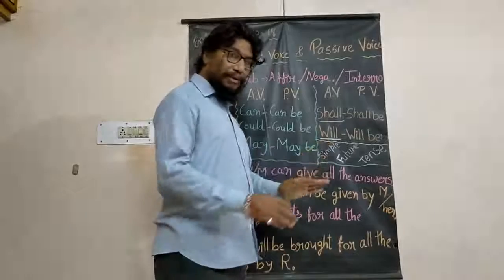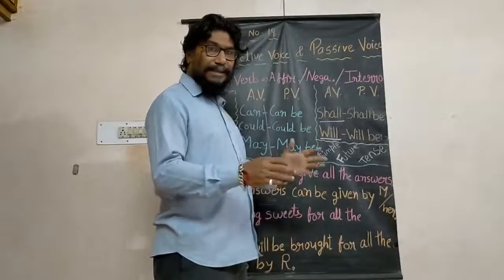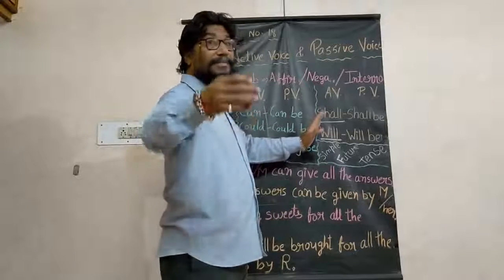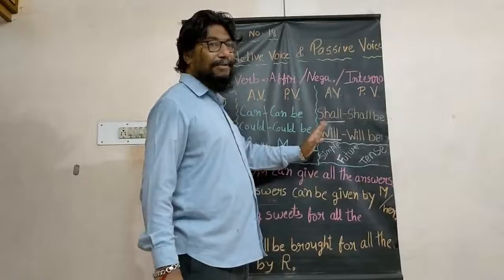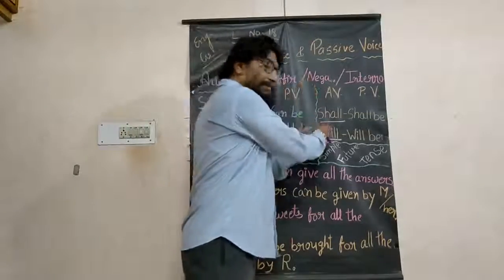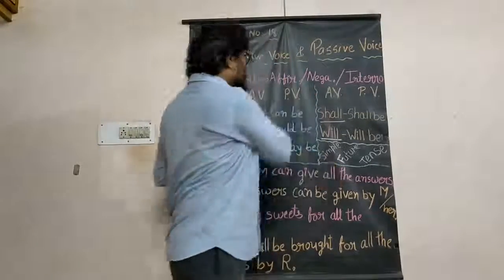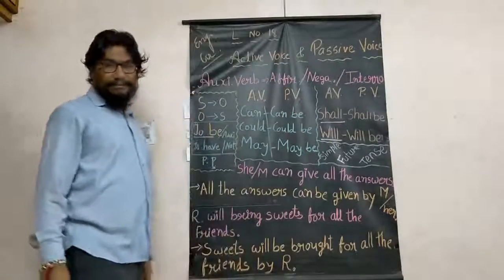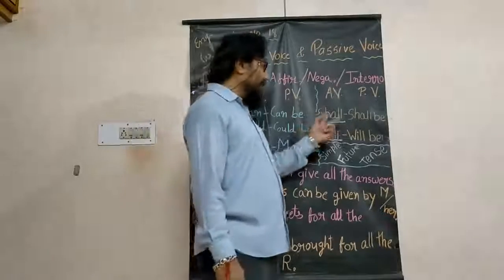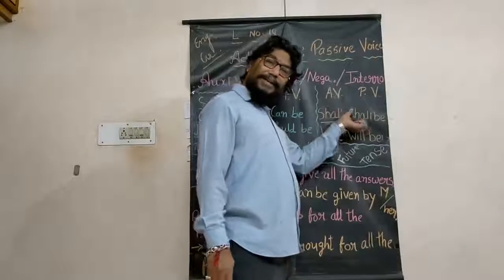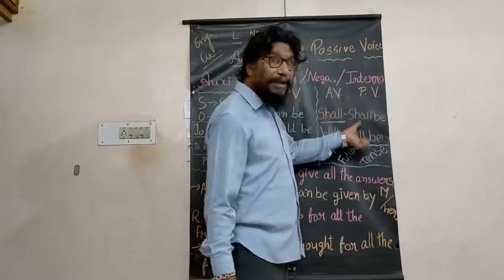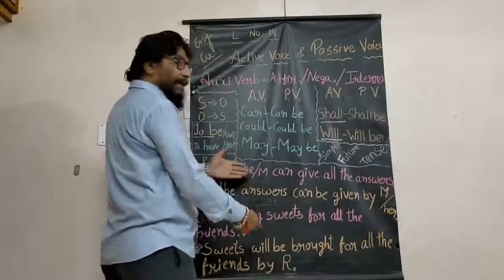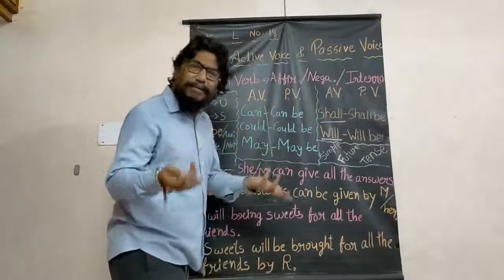With shall and will, you use the V1 form — that is the basic structure of simple future tense. I have not touched simple future tense till now for this reason. I will not teach it as simple future tense; I will teach auxiliaries, and with these auxiliaries, simple future tense will automatically be covered. Shall becomes shall be, will becomes will be — you simply add 'be'.